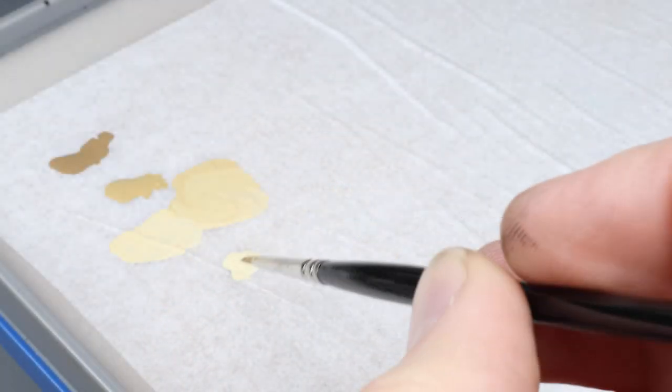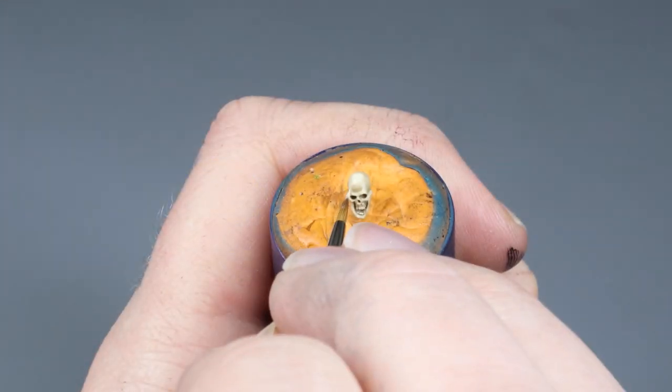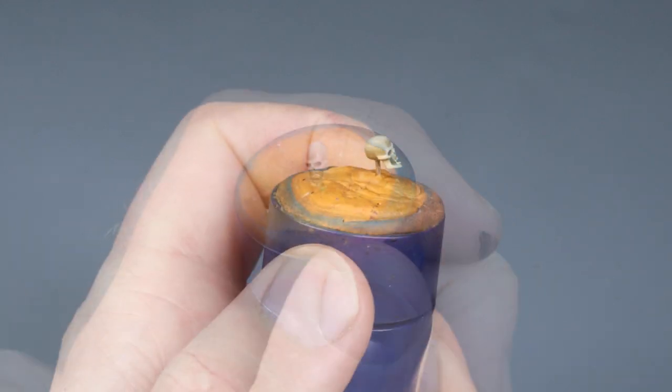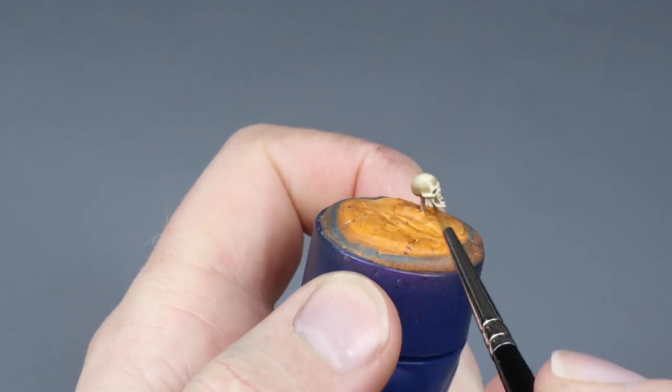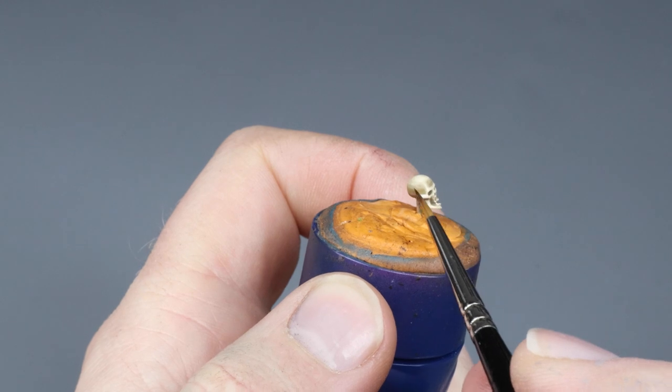Keeping with the same practice, we apply a layer of pure Screaming Skull. You should now be able to see some really nice transitions right there on the side of the cranium.